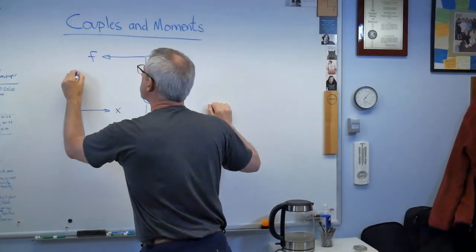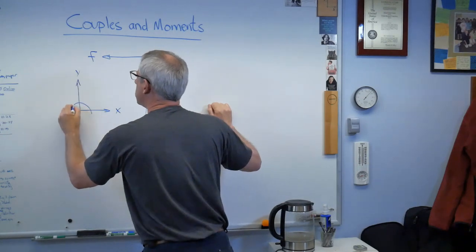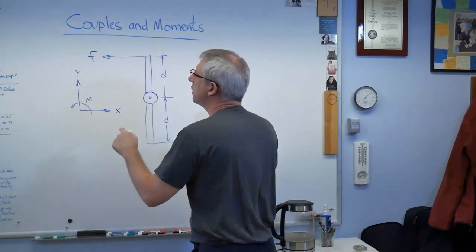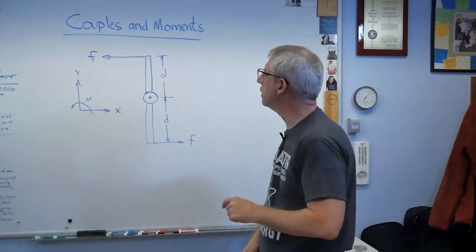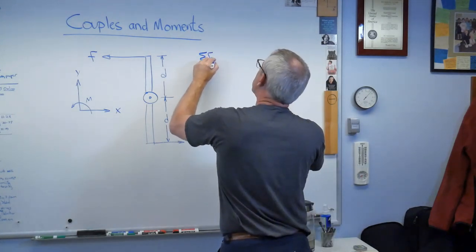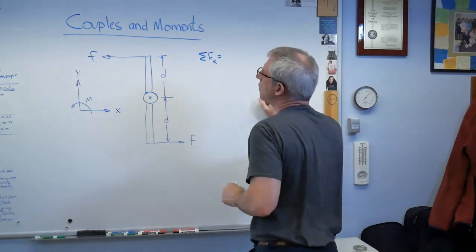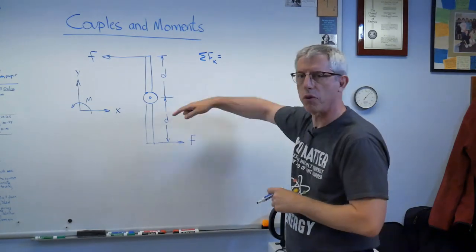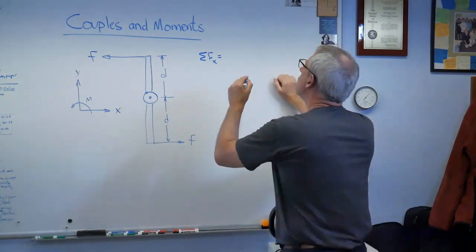So I'm going to need a coordinate system. And as always, if I don't have a pretty good reason otherwise, I'll use that as a coordinate system. Let's do this. Let's sum the forces in the x direction and see what those are. I bet there's zero. Now, there are no forces in the y direction, so I don't have to do that.